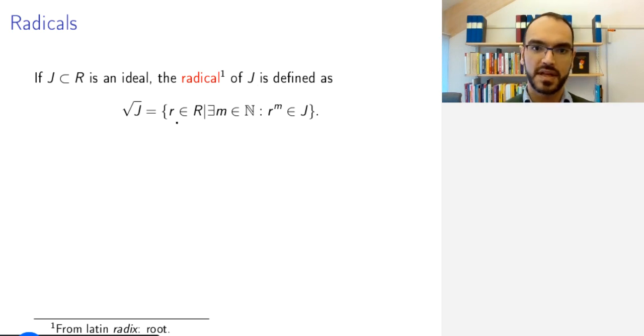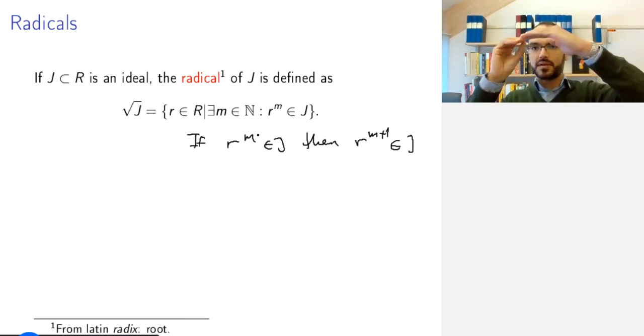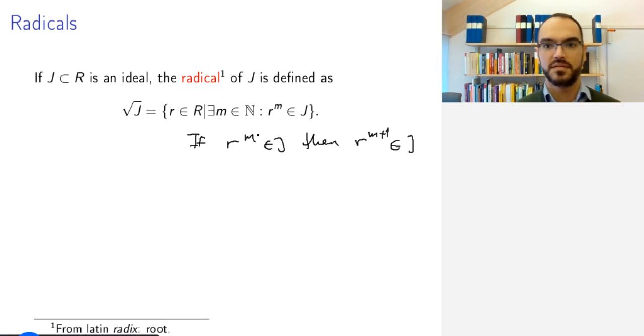It's the set of all elements of the ring such that some power of those elements belong to this ideal. Observe, of course, that if R^m belongs to J, then R^(m+1) will also belong to J because you can multiply with any element from the ring and remain in the ideal. This is somehow elements that aren't themselves in J but starting from some power they become elements of J.